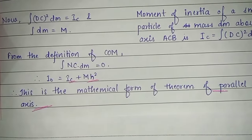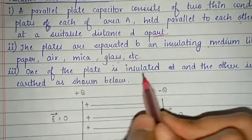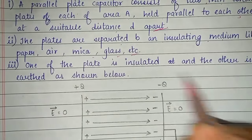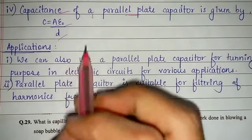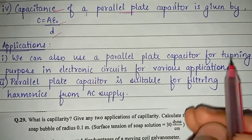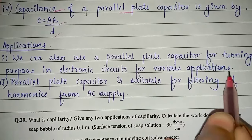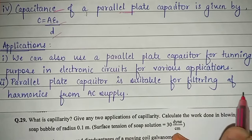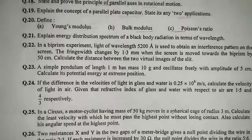Question number 19: explain the concept of a parallel plate capacitor and state any two applications. A parallel plate capacitor consists of two thin conducting plates, each of area A, held parallel to each other at a distance d apart. The plates are separated by an insulating medium like paper, air, mica, or glass. Capacitance C = ε₀A/d. Applications: used for tuning in electronic circuits, and for filtering harmonics from AC supply.